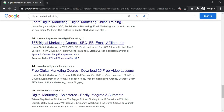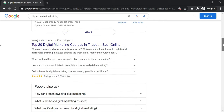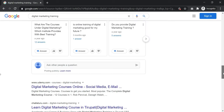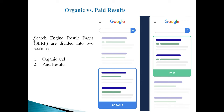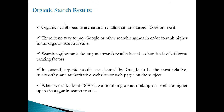Paid results appear at the top and bottom of the Google page with an 'Ad' indicator. Below or alongside these are map results. Then come the organic results. Organic results are 100% merit-based — Google ranks them based purely on the quality of your website, not because you paid. Google regularly updates its algorithms, and your site must keep meeting those standards.